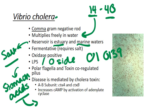Vibrio cholerae also has a polar flagella important for motility and a toxin co-regulated pilus, which allows it to adhere to the intestinal epithelium. It is non-invasive and only causes damage to the lumen of the intestine, but these pili are a virulence factor because they allow it to adhere.